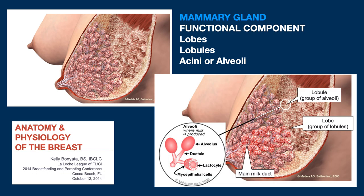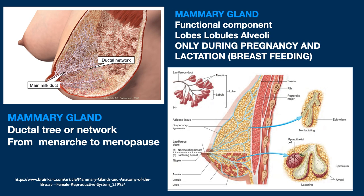We know the division of the gland into lobes, lobules, and acini or alveoli. If this fact is often overlooked, the gland is active only during pregnancy and lactation. For the rest of the time, from menarche to menopause, it is at rest. The glandular part is then composed only of the ductal tree or network, and it is the terminal part of the ductal tree that evolves and forms the acini when the gland is active.